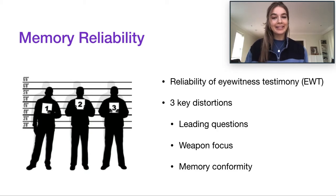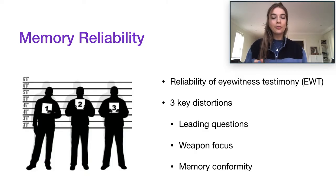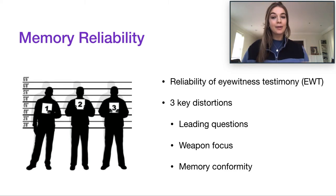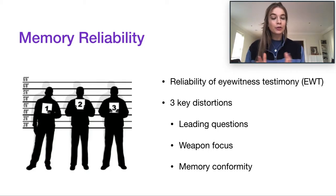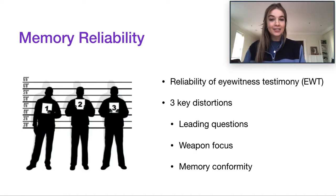Bartlett, who we talked about in the last video on schemas and who is huge within memory and cognitive research, has quite a famous saying: that human memory isn't an exact replica but rather what we call an active reconstructor. So we don't photograph things that happen in the real world in some mental camera; instead we take pieces of information from an event and adapt them to create a memory. There are specifically three key distortions, and we'll talk about two of them today — leading questions and weapon focus.